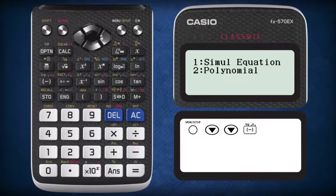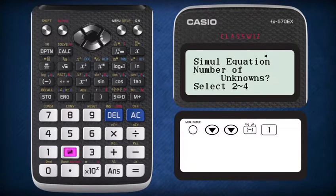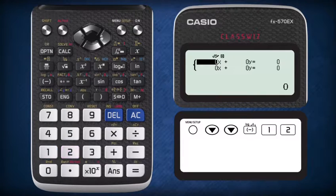Now, two options are available. One is to solve the polynomial equations and the other is to perform simultaneous linear equations. Select two and you will see this screen.